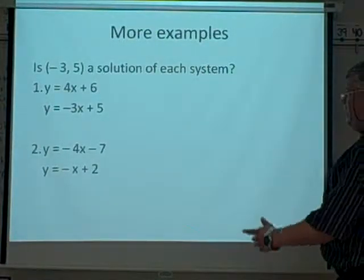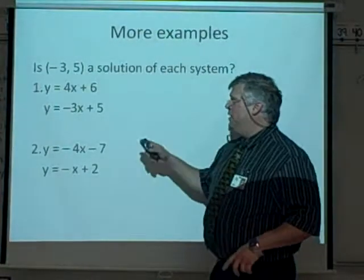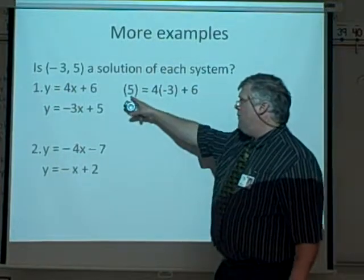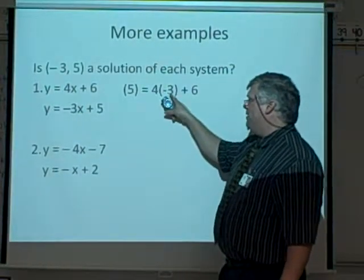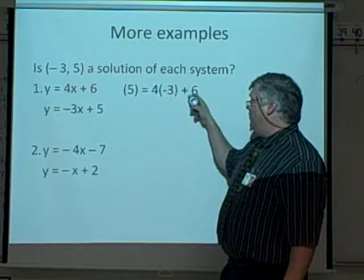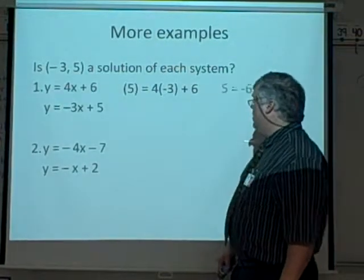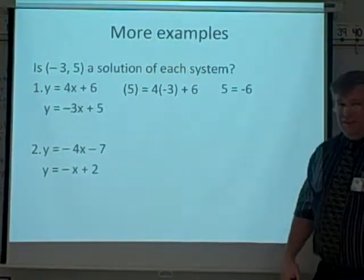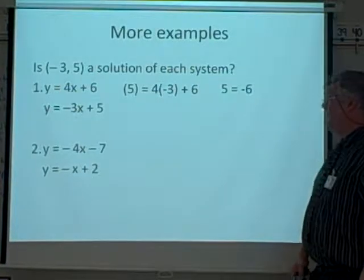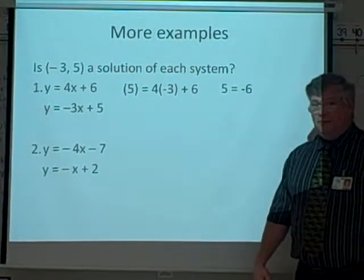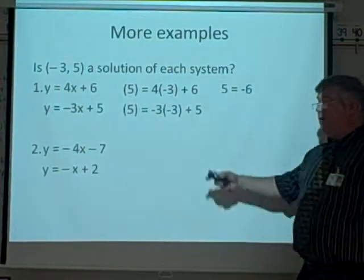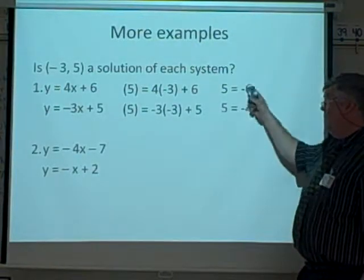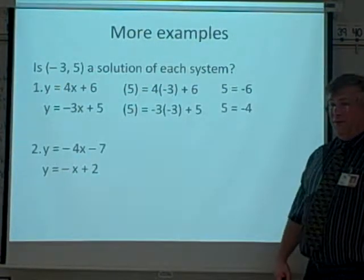More examples. Here we have a point, (-3, 5), and we've got two equations. We plug them in. Again, 5 for y, -3 for x. 4 times -3 is -12. Plus 6 gives me -6. Is 5 equal to -6? No, it isn't. So is this a solution to that system? No. Do I have to even go through that part here? No. Once one of them doesn't work, we know it's not a solution.